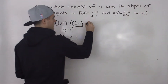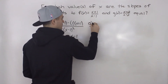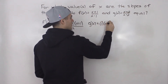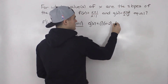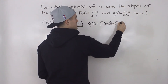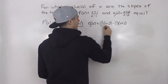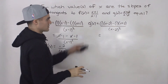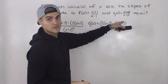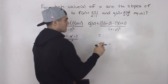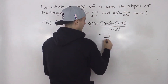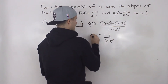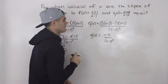For g(x), we apply the same quotient rule: the derivative of the top times the bottom minus the derivative of the bottom times the top, all over the bottom squared. Distributing and simplifying — the x's cancel out — and we're left with negative 4 over (x-2) squared. That's the derivative of g(x).